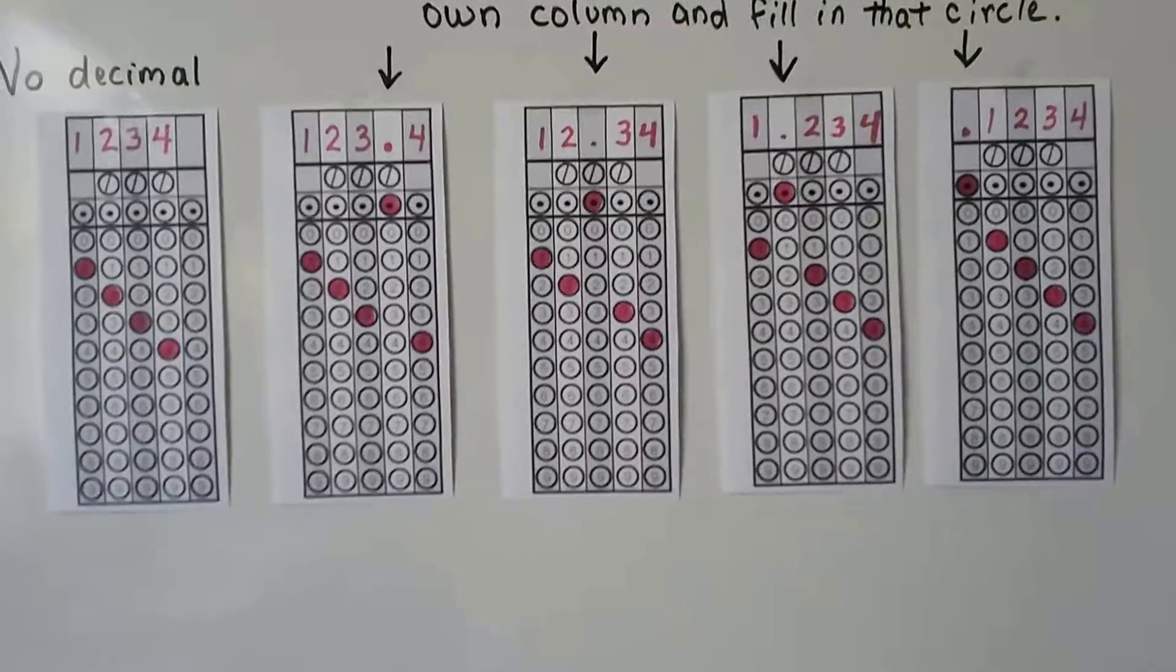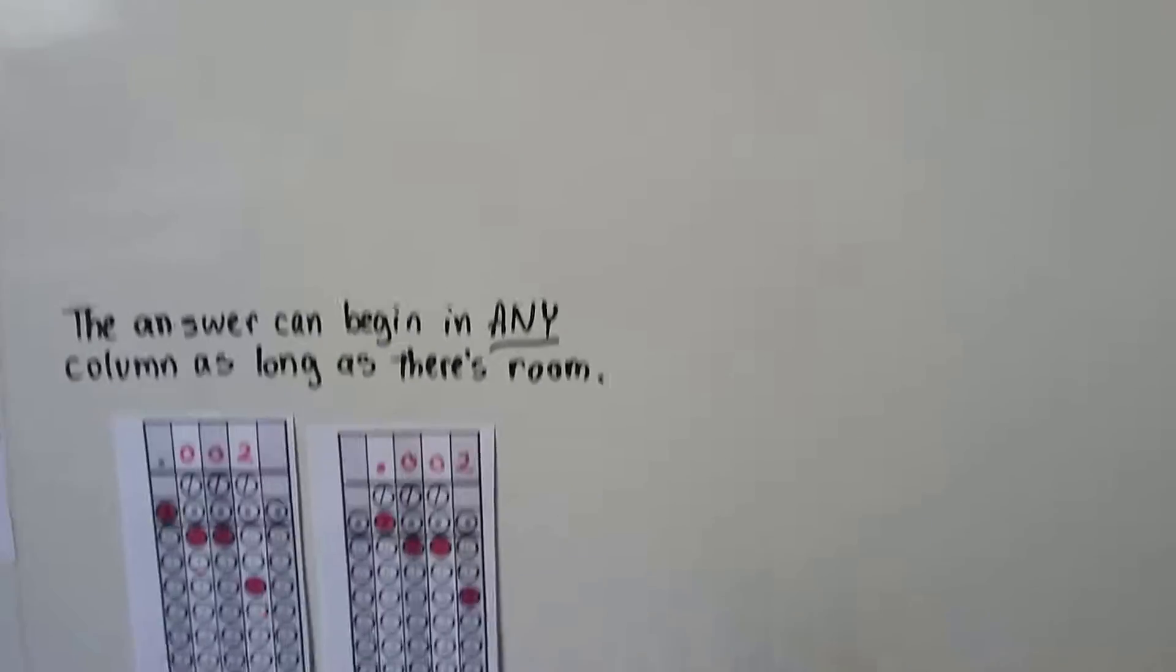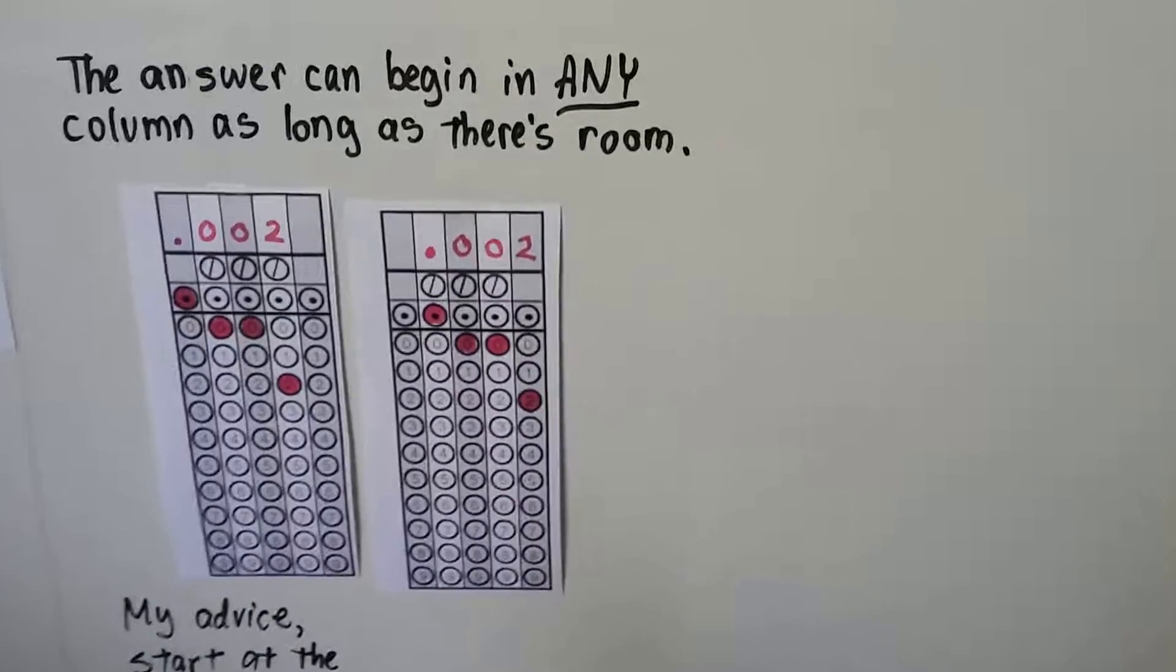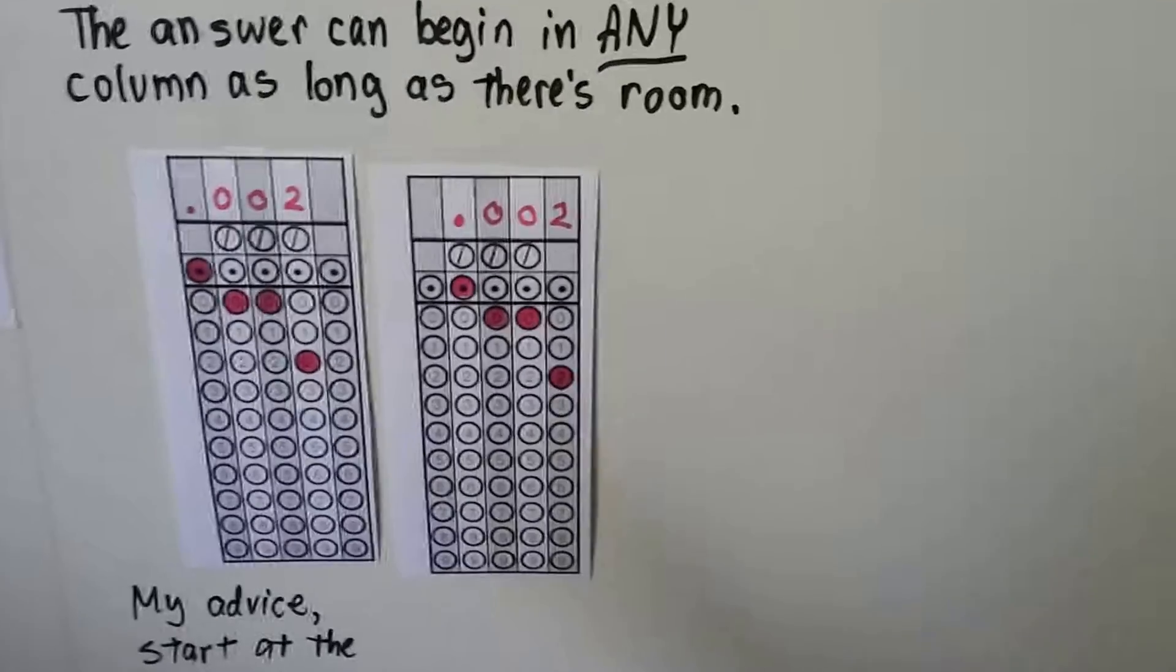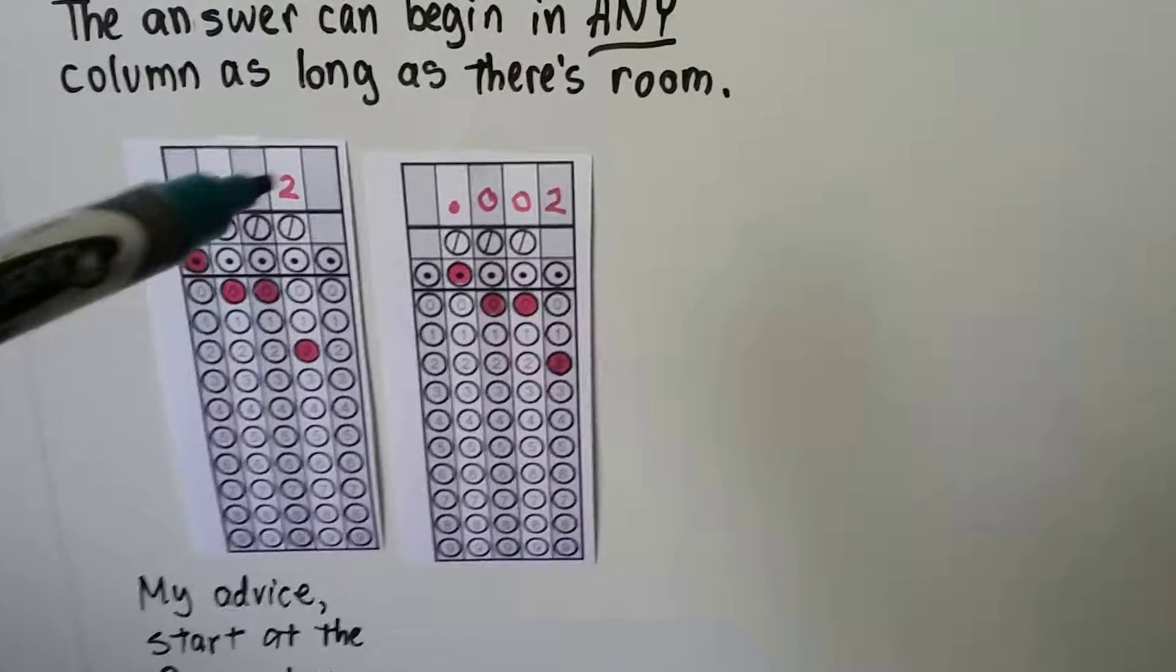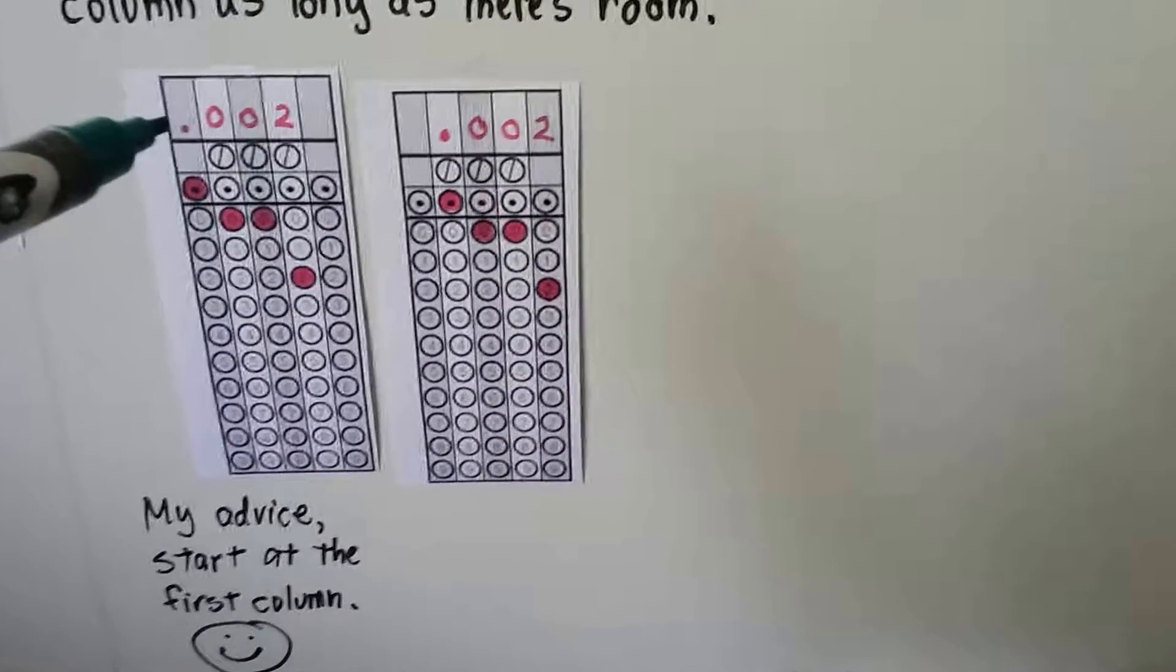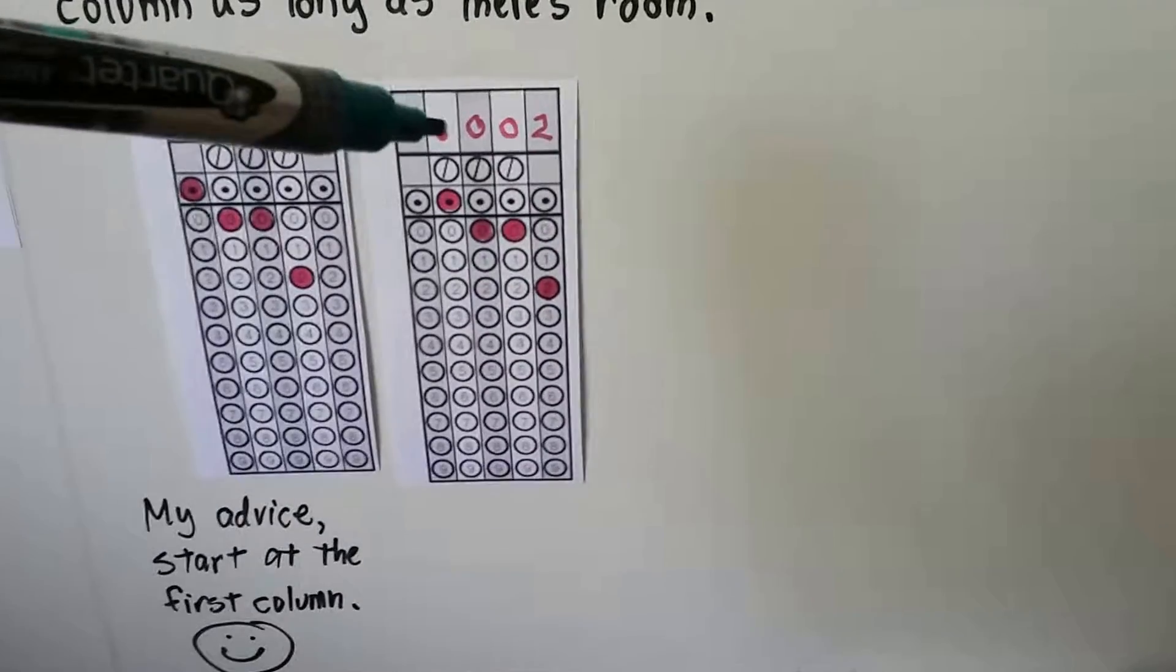One slight mistake could be you failing the GED test. And this answer can begin in any column as long as there's room. So if your answer is two thousandths, which is 0.002,